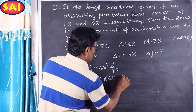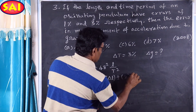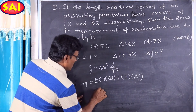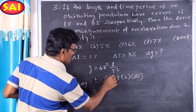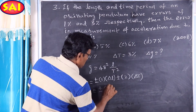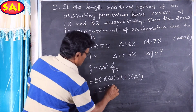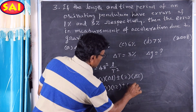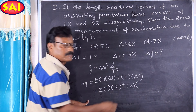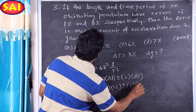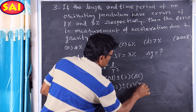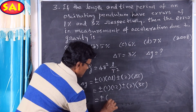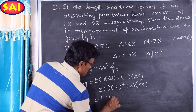Plus or minus 2 into delta T. So, plus or minus 1 into 1 percent, plus or minus 2 into delta T, which is 3 percent. That is equal to plus or minus 1 percent plus...